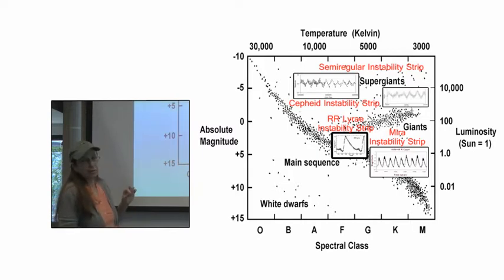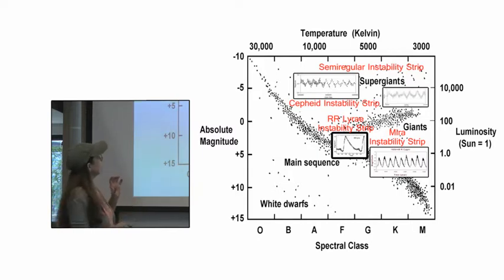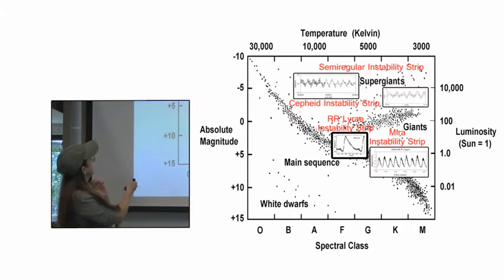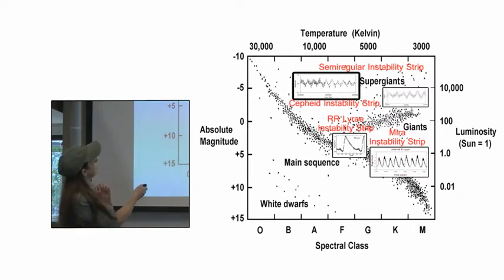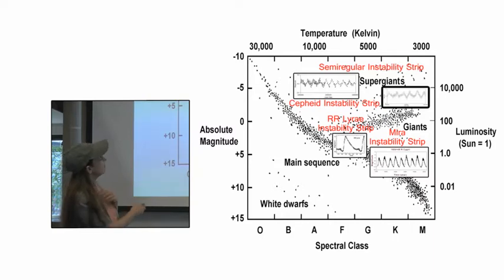R.R. Lyrae stars have a period of less than a day and they don't vary more than one magnitude. The Cepheid instability strip pulsates in a very periodic fashion. This is a semi-regular light curve — I believe that one is Betelgeuse.